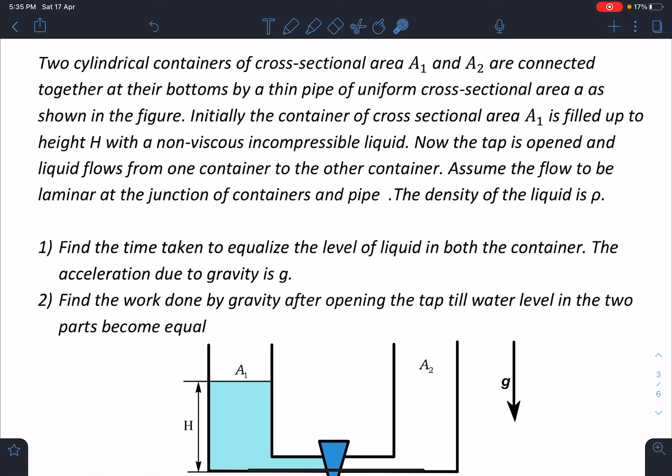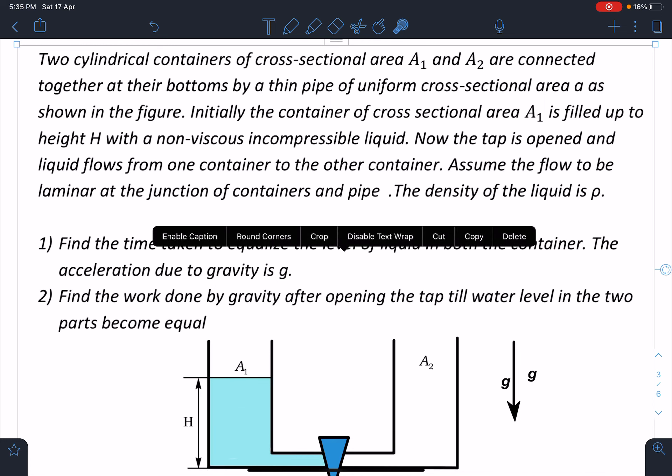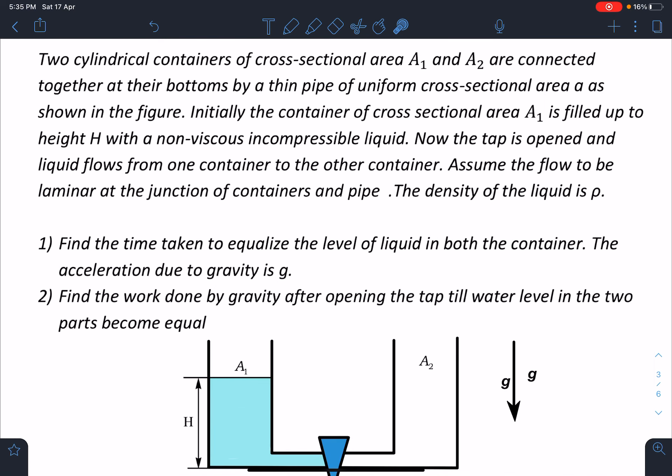Here is the problem statement: Two cylindrical containers of cross-section area A1 and A2 are connected together at their bottom by a thin pipe of uniform cross-sectional area a as shown in the figure. Initially the container of cross-section area A1 is filled up to height H with a non-viscous incompressible liquid. Now the tap is open and liquid starts flowing from one container to another container. Assume the flow to be laminar at the junction of containers and pipe. The density of liquid is ρ. First part of the problem is: find the time taken to equalize the level of liquid in both containers, and the acceleration due to gravity is g. Second part is: find the work done by gravity after opening the tap till water level in the two parts become equal.